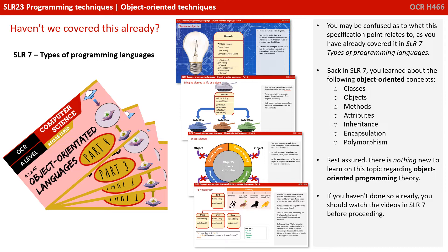Back in that SLR, you learned about the following OO concepts: classes, objects, methods, attributes, inheritance, encapsulation, and polymorphism. Now rest assured there's nothing new to learn on this topic regarding object-oriented programming theory. So if you haven't done so already, you should watch the videos in SLR 7 before proceeding.